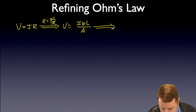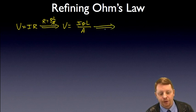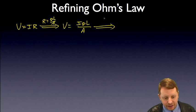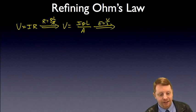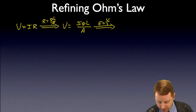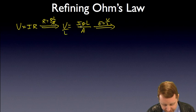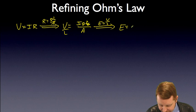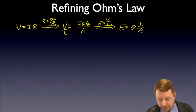But, we also know that the electric field, when we're talking about a uniform object like this, is just going to be the potential drop divided by its length, E equals V over L. So, I could then pull the L over to the left-hand side, divide both sides by L, and the left-hand side becomes E is equal to resistivity times current divided by area.